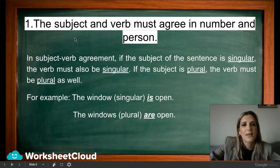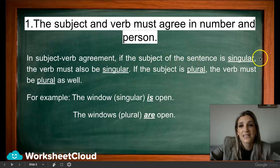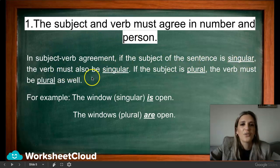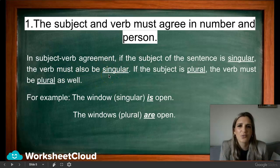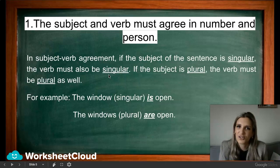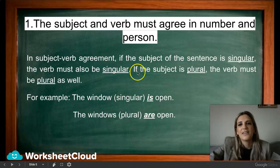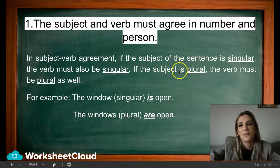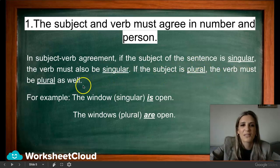The Subject and Verb must agree in number and person. In Subject-Verb Agreement, if the Subject of the sentence is singular, the Verb must also be singular. That sounds quite simple, but if you don't know the difference between singular and plural, then you're going to struggle. If the Subject is plural, the Verb must be plural as well.